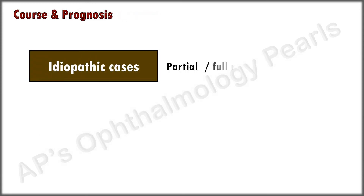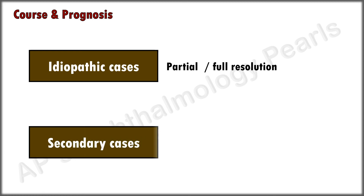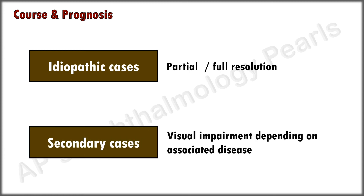In idiopathic cases, full resolution of scotomas has been reported, but partial resolution is the most common outcome. Those cases that do not spontaneously resolve develop long-term effects such as thinning and atrophy of the affected inner nuclear layer, which is responsible for the permanent visual defects. In secondary cases, visual impairment depends on the associated causative pathology.